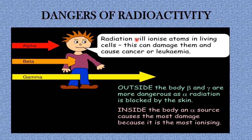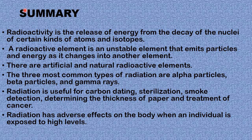What are the dangers of radioactivity? Radiation will ionize atoms in living cells, which can damage them and cause cancer or leukemia. To ionize an atom means to remove electrons from it, thereby damaging it. Outside the body, beta and gamma are more dangerous as alpha radiation is blocked by the skin. If the source of alpha radiation is inside the body, it causes the most damage as it is the most ionizing — it can cause skin cancer, mutation, and serious damage to the body.